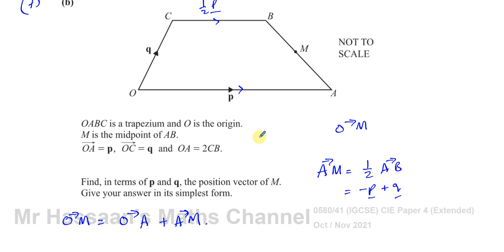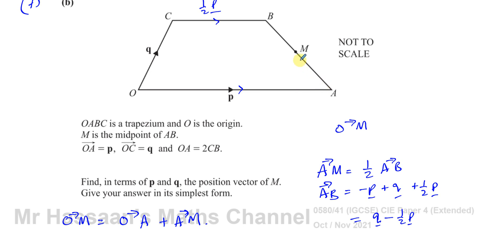So A to B is: minus p plus q plus ½p, which simplifies to q minus ½p. Therefore A to B equals q minus ½p.